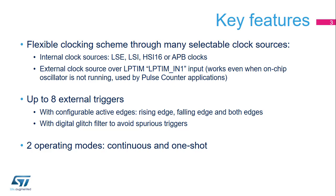The low-power timer has a very flexible clocking scheme. It can be clocked from on-chip clock sources — LSE, LSI, HSI-16, or APB clocks — or it can be clocked from an external clock source over the low-power timer's LP-TIM-IN1 input. This latter feature is used for building pulse counter applications and is a key function for metering applications like gas meters, etc.